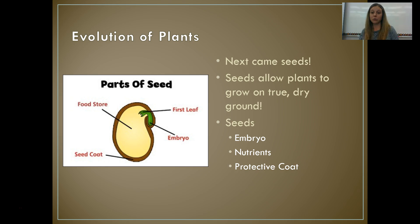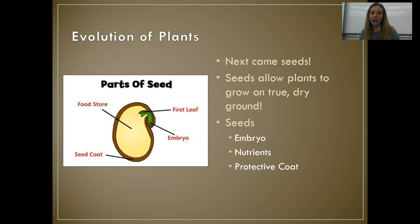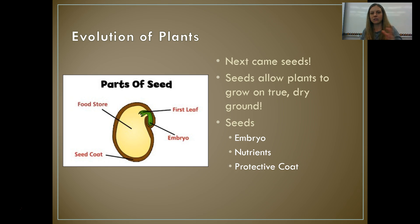Now we're going to move on to our seeded vascular plants. The seed is a super important structure that evolved over the history of plants. Seeds were the final structure that allowed plants to move to true dry ground. Roots helped, vascular tissues helped — allowing movement from very moist to drier areas — but it was really the seed that made that final jump.